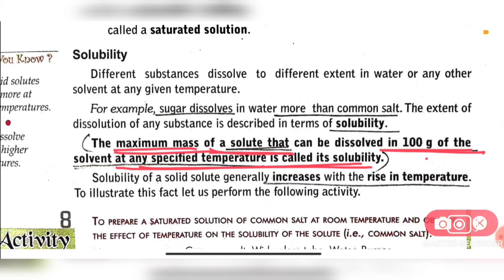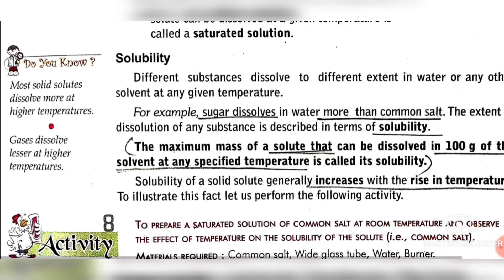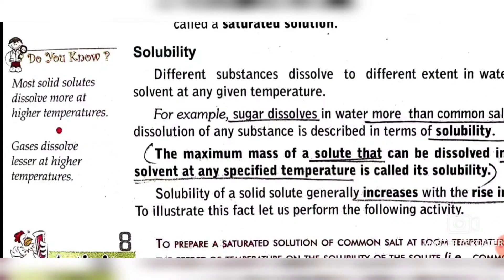At any specific or particular temperature, the maximum mass of solute that can be dissolved in 100 grams of solvent — that number is called the solubility. As I told you, solubility normally increases with the increase in temperature, that's why we have to specify the temperature. Most solid solutes dissolve more at higher temperatures.